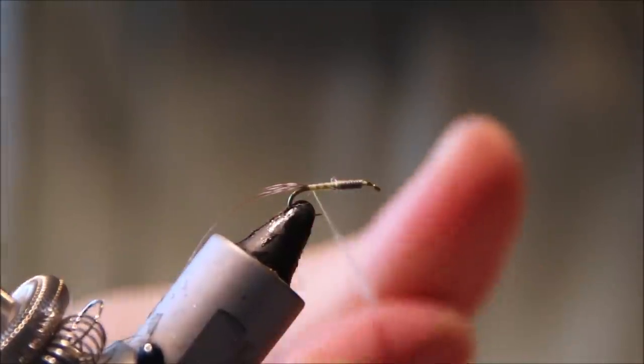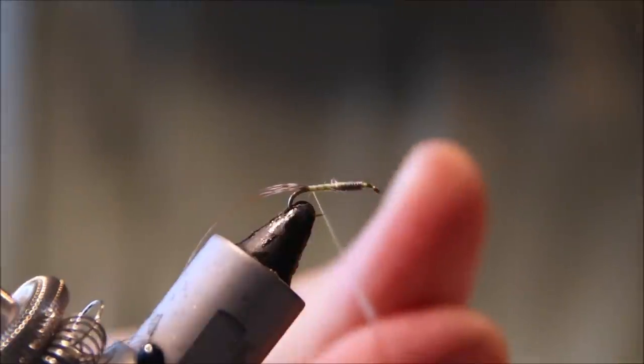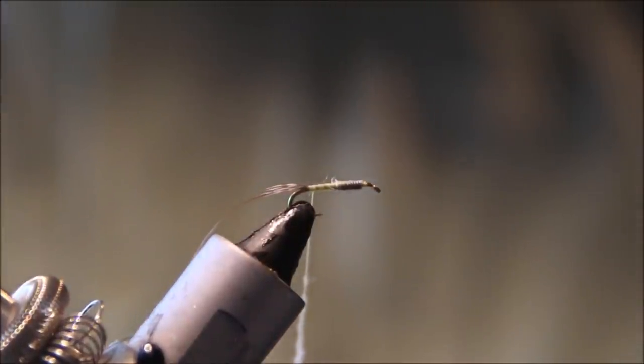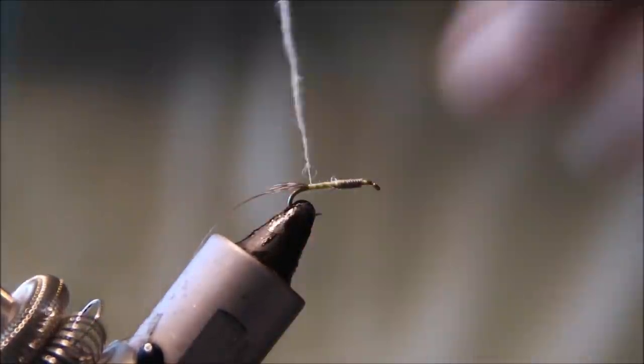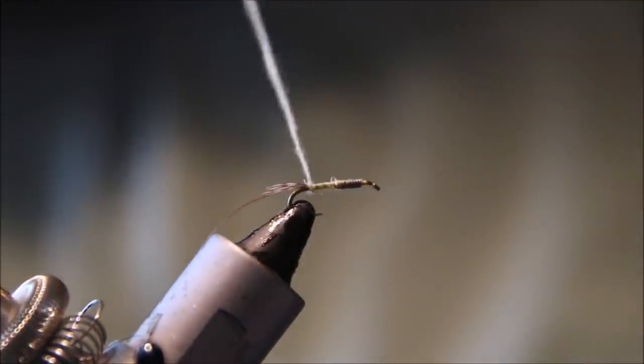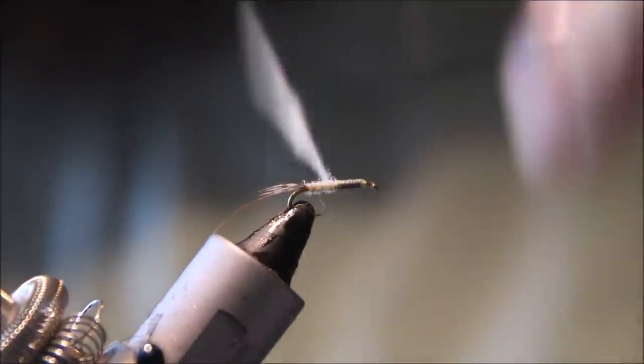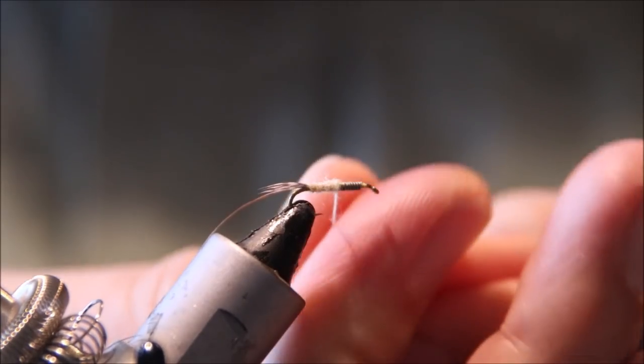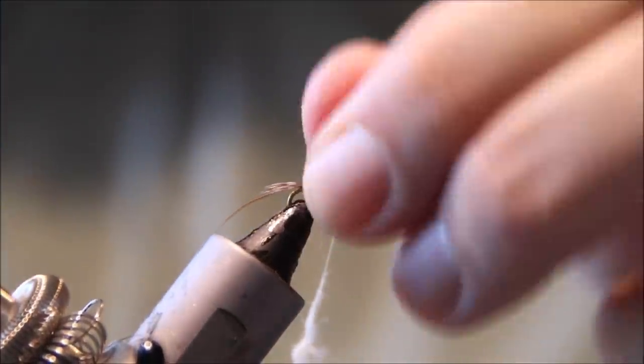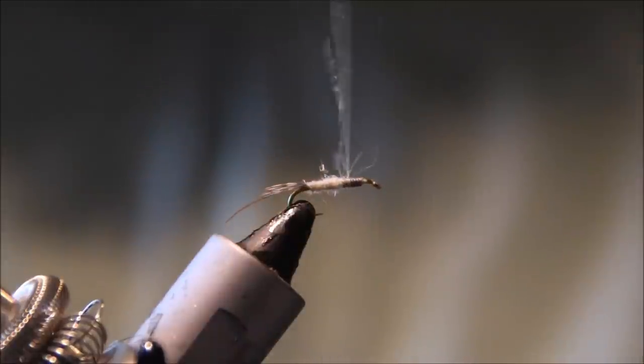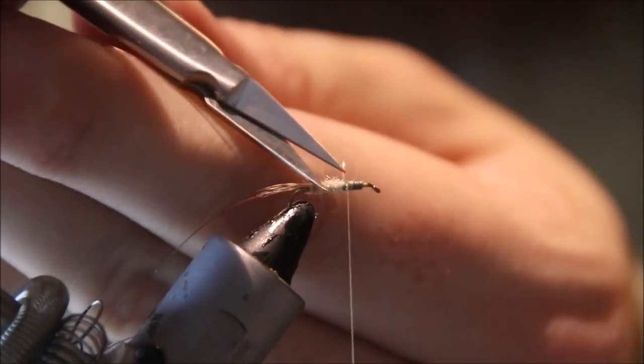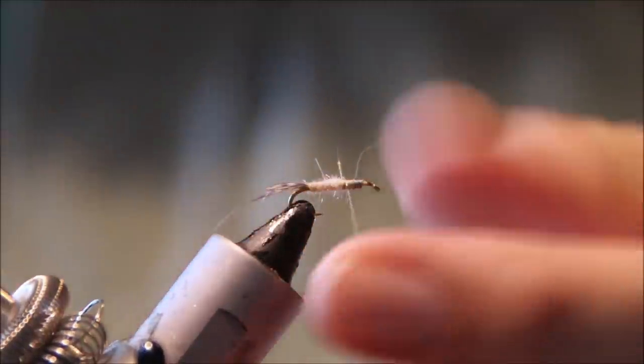I'm going to put on a tight, fine dubbing rope - no pills, nice and even. Then take it forward, building a tapered body. There are a couple of long fibers - you can leave them if you like, but I just pick them out.